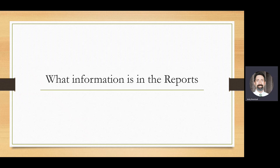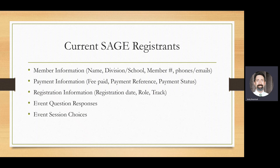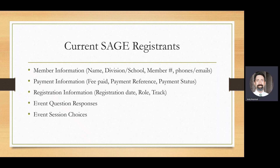The current SAGE registrants report has a number of sections. First is member information, which includes the name of the person, their member number, the division and school where they work, and any phones and emails we have in our system. Note this is only the most up-to-date information in our membership system, so there may be gaps. You'll also see payment information — how much they paid, the payment reference, and their payment status. You'll see registration information including date and time, which role they chose, and which track they selected. We also have event question responses included in this report.